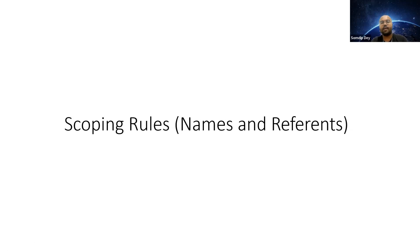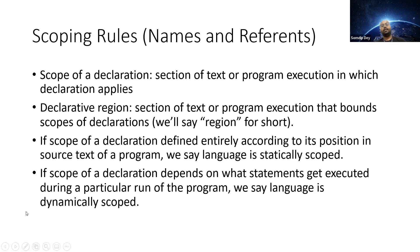When talking about scopes within a program and how variables are defined and referenced, we need to understand scoping rules. The scope of a declaration generally means the section of text or program execution in which the declaration applies. The declarative region is the section of the text that bounds the scope of a declaration — it is the region within which something is declared or valid.